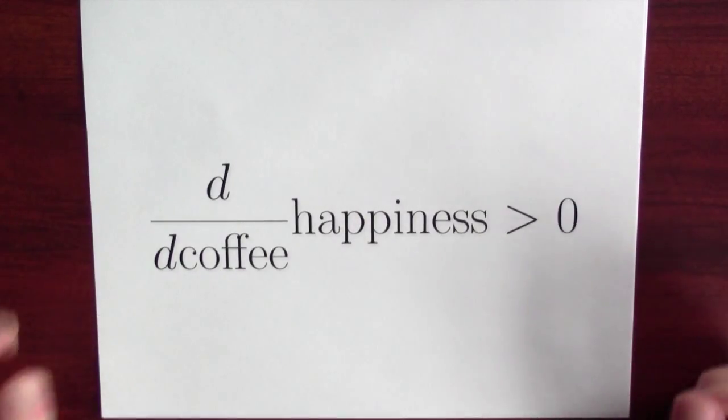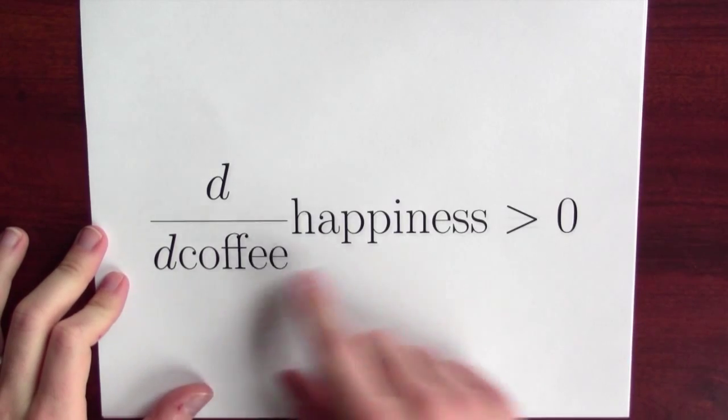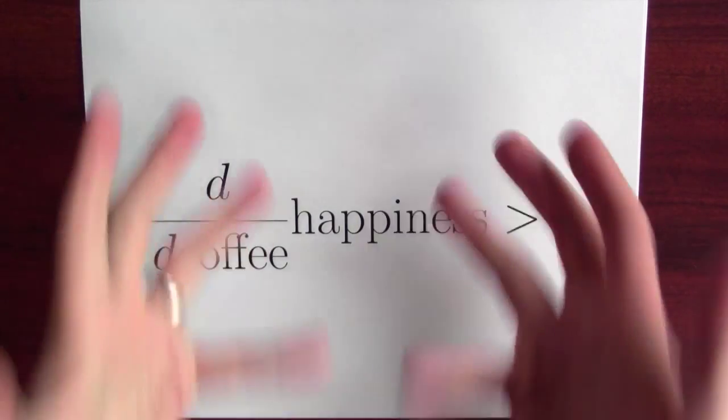And you can see the same thing in your own life. For instance, suppose you know that the derivative of your happiness with respect to coffee is positive. What does that really mean?